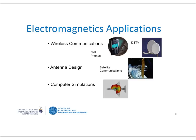We see electromagnetics applications all around us. Every cell phone has a little antenna built into it. The round DSTV dish is an antenna, and if you look at the satellite, you can see the big antenna on its side. Some academics at Wits also developed a computer simulation that does electromagnetic simulations, as you can see in this picture.